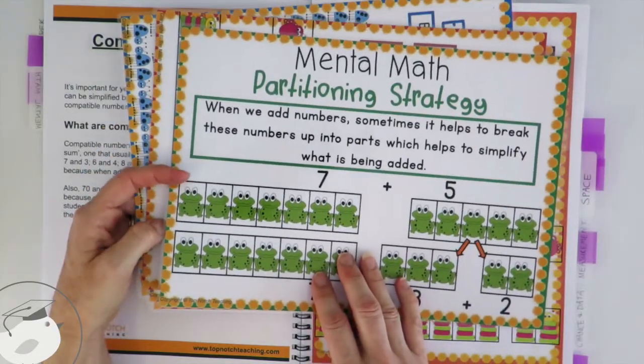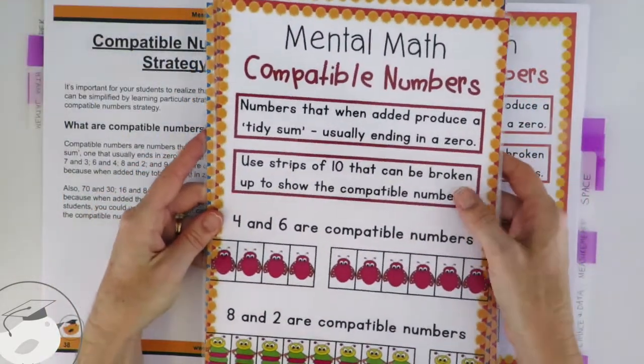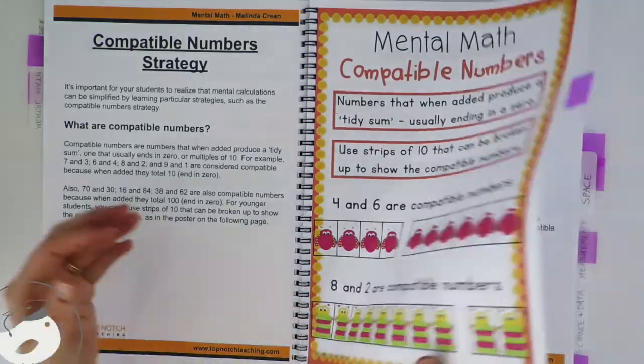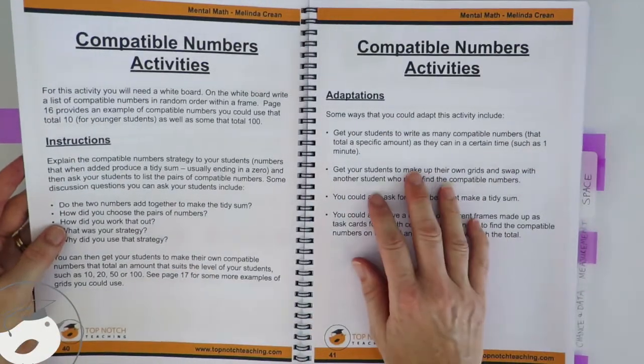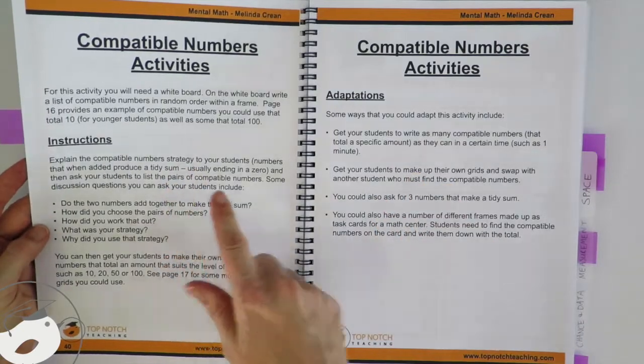And with most of them you get a poster which explains the mental math strategy, such as these ones. But you also get some games and activities as well. So as you can see with the compatible numbers strategy, there's instructions on how to do an activity.